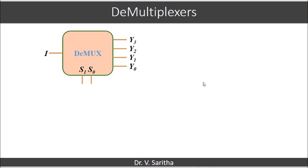Then comes demultiplexer, which is the reverse operation of the multiplexer. If you have seen in multiplexers we have 2^n inputs, one output, and n selection lines. In the case of demultiplexer, we have one input, n selection lines, and 2^n outputs.